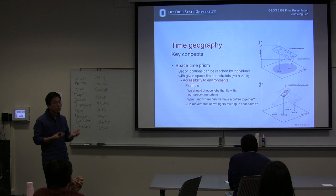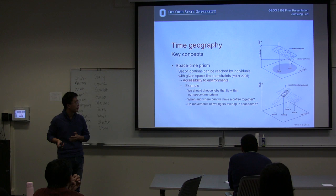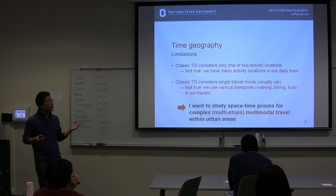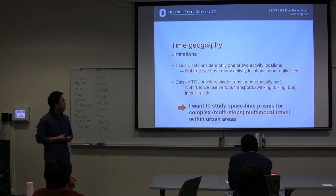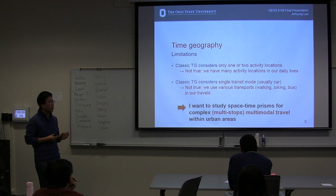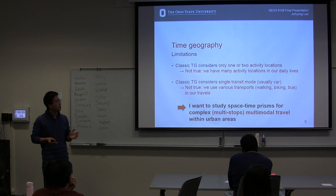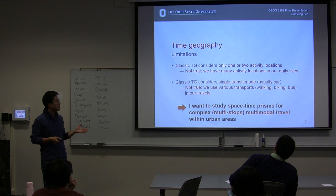The movements of two tigers in space and time can be analyzed using the Time Geography concept. But there are some limitations. Classic Time Geography considers only one or two activity locations, which is not realistic — we have many activity locations in our daily lives. Classic Time Geography also considers only simple transit modes such as walking, biking, bus, or subway. So I want to study space-time prisms for complex, multi-stop, multi-modal travel within urban areas.